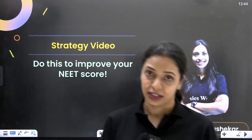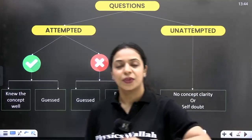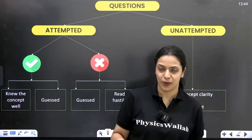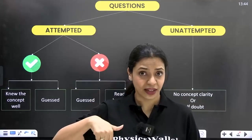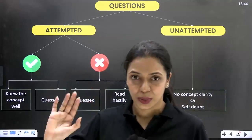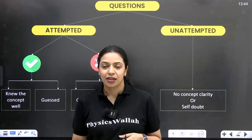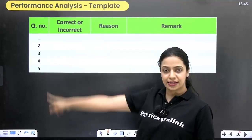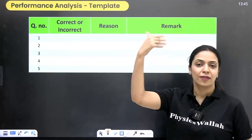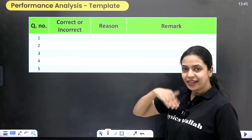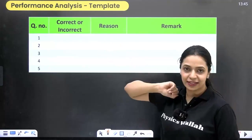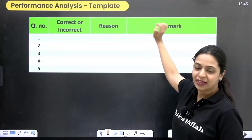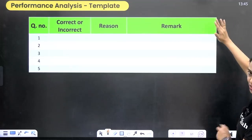How exactly do we do that? I'll give you a template. Let's say you've taken a mock test and answered all 180 questions. What I'm saying now is not specific to biology — it's general. You have to do it with all the subjects. Make a table where you have all the question numbers listed. Take a notebook and write 1 to 45 for physics, 1 to 45 for chemistry, and so on. Right next to that, make a column for correct or incorrect. Next to it, make another column with 'reason' and then 'remark'. Make a table very similar to what you're seeing right now.